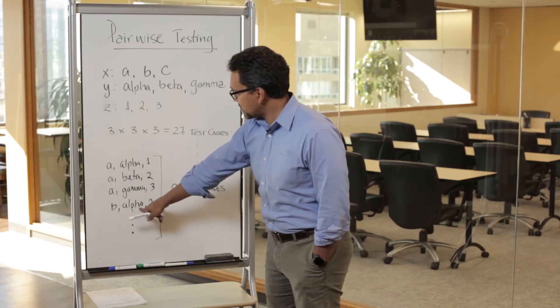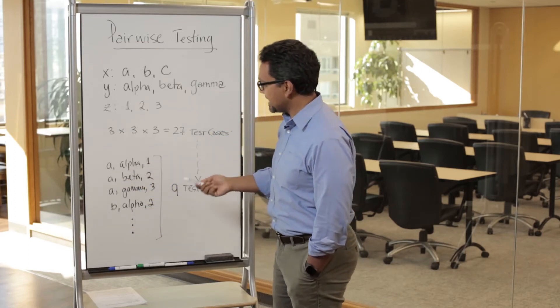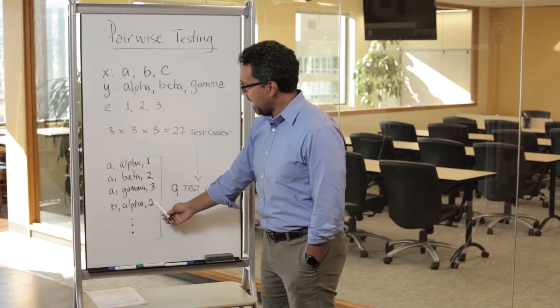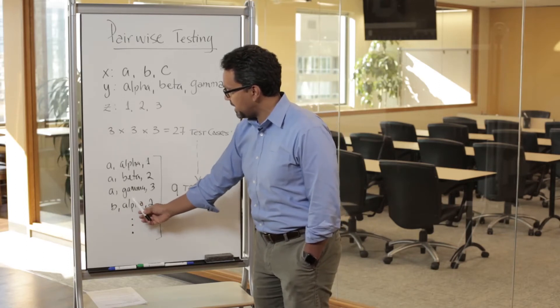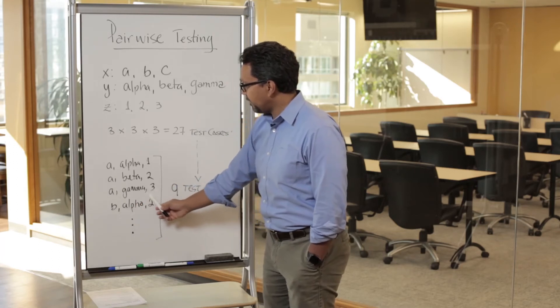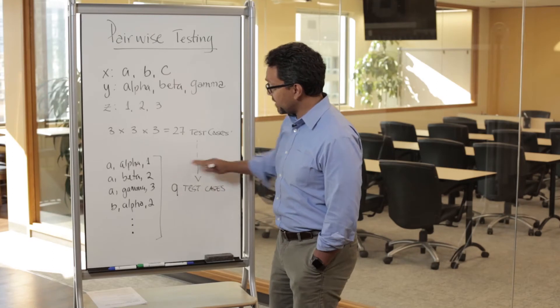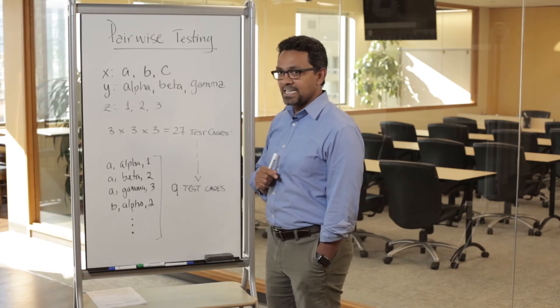Now I have B and two being tested, B and alpha being tested, alpha and two being tested. So I can keep going like this, and you're going to need only nine test cases to test all the pairs.